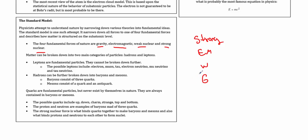Ranked strongest to weakest: strong nuclear, electromagnetic, weak nuclear, and gravity — by far the weakest. Gravity and electromagnetism are infinite forces that extend infinitely and never reach zero. The strong and weak nuclear forces only exist within the atom; the strong nuclear force only within the nucleus. A common exam question: which subatomic particle is not affected by the strong nuclear force? The electron — it's outside the nucleus, but is affected by the other three forces.